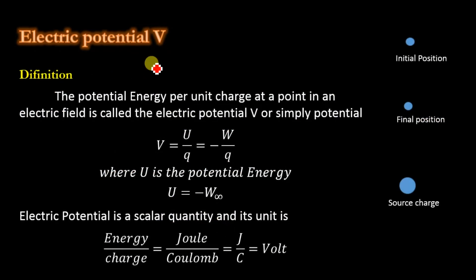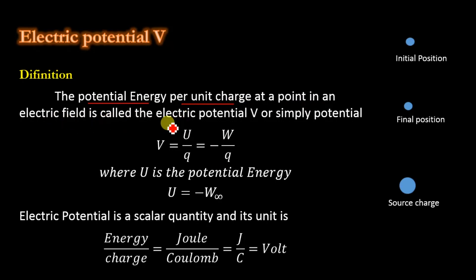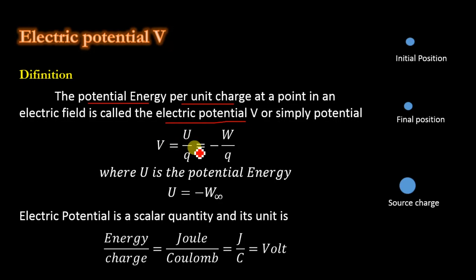Electric potential is the potential energy per unit charge. The potential energy per unit charge at a point in an electric field is called electric potential V, or simply potential. The electric potential is denoted by V, which is equal to potential energy divided by charge Q, or in terms of work, minus W divided by Q.